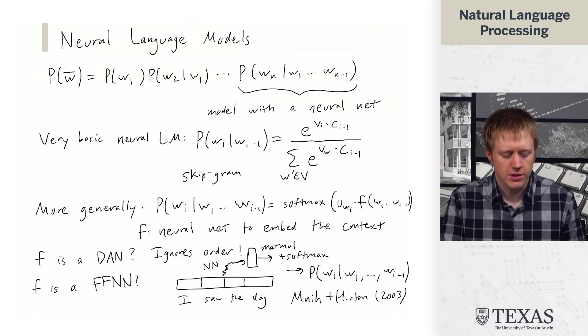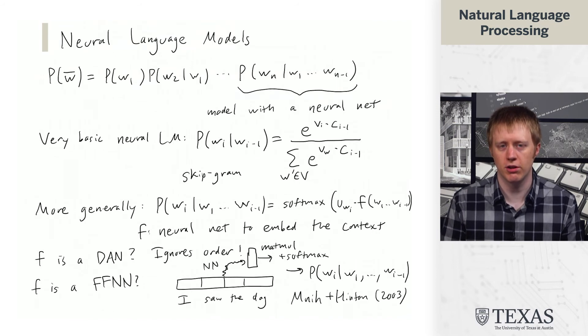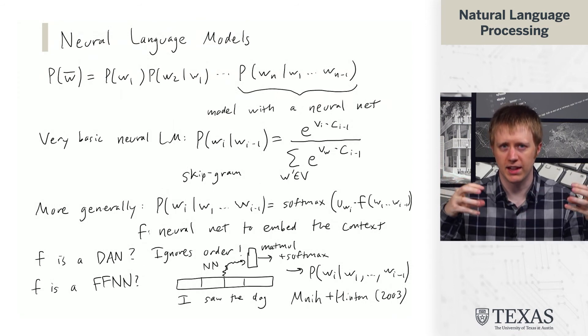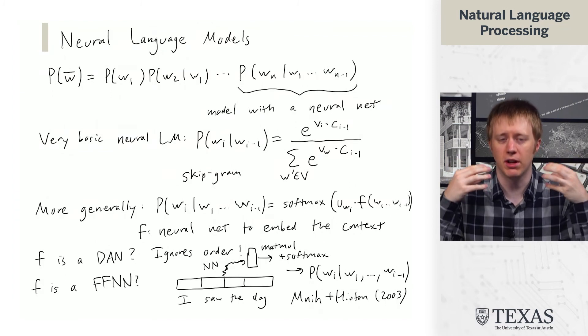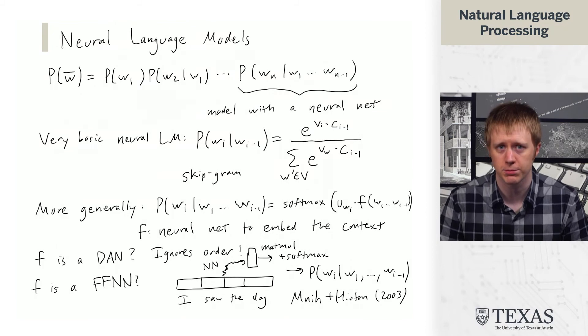So these are both viable approaches for building neural language models. But where we're going next is to look at how recurrent neural networks can solve this problem. What recurrent neural networks are going to allow us to do is they're going to allow us to break away from this dependence on a number of parameters that has to scale with the amount of the input that you're looking at or the amount of context for the language modeling problem.